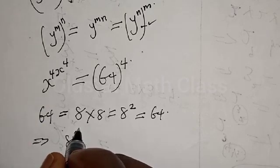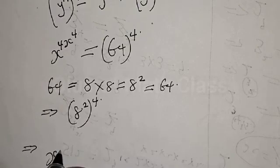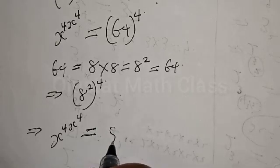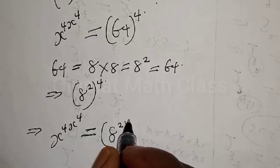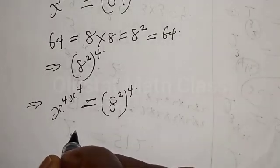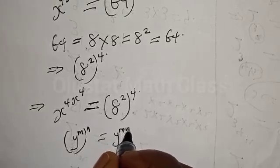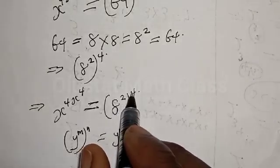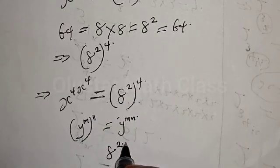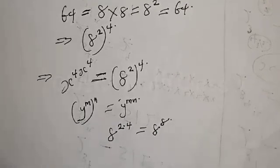So we have 8 squared raised to the power of 4. Our equation becomes s raised to power 4 times s raised to power 4 is equal to 8 squared raised to power 4. We also know that y raised to power m raised to power n is the same as y raised to power m times n. Therefore, 8 squared raised to power 4 can be written as 8 raised to power 8.